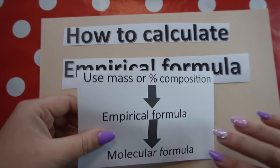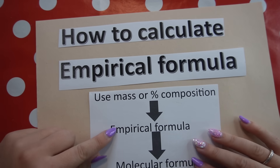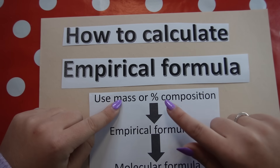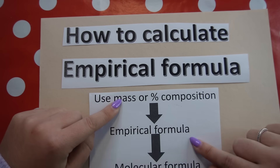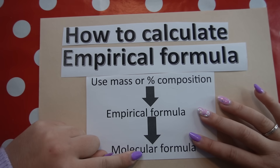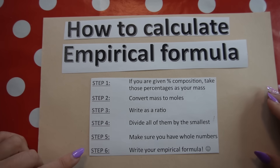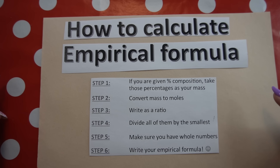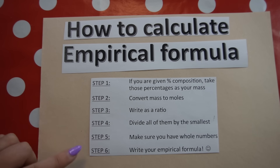Let's look at how we calculate the empirical formula of a compound if given the percentage composition or masses of the different elements. We'll go from mass or percentage composition to empirical formula, then look at how to convert the empirical formula into the molecular formula. These are the steps we will use.